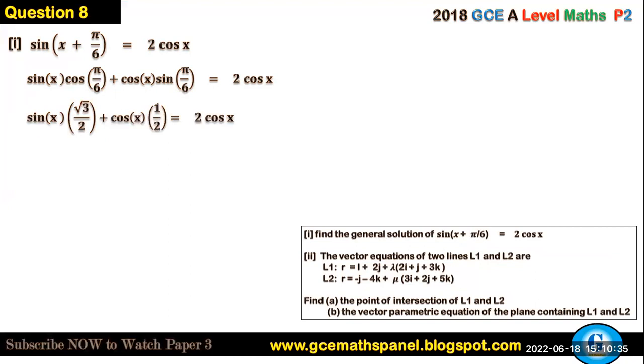So multiply all this by 2, we will have √3 sin x + cos x equal to 2cos x.